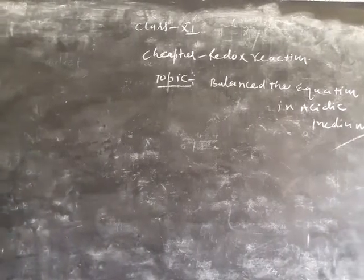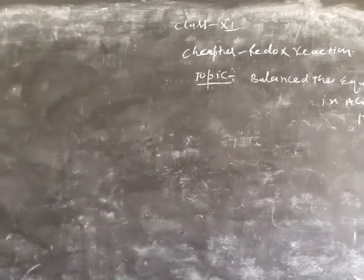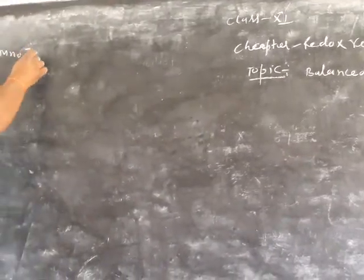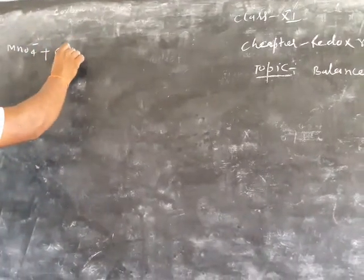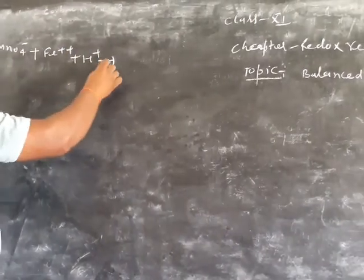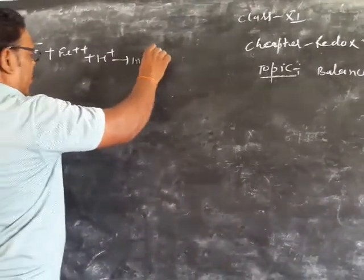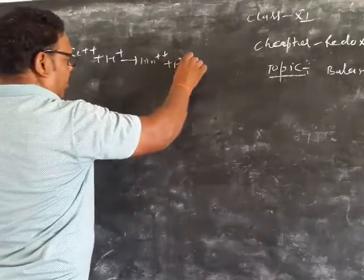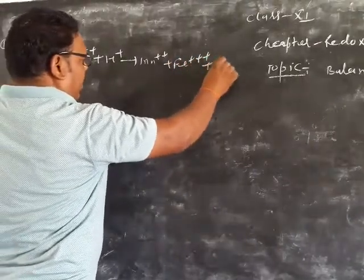The equation first is MnO4- plus Fe2+ plus H+ gives Mn2+ plus Fe3+ plus H2O.